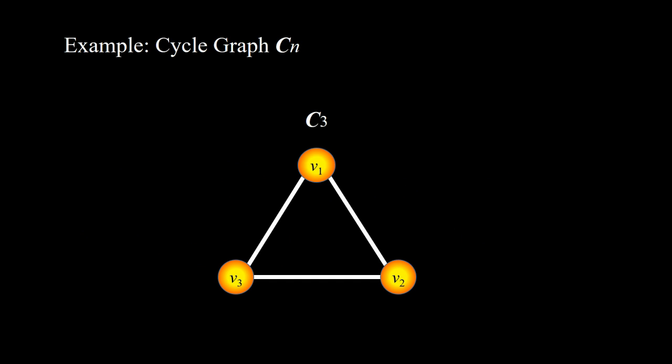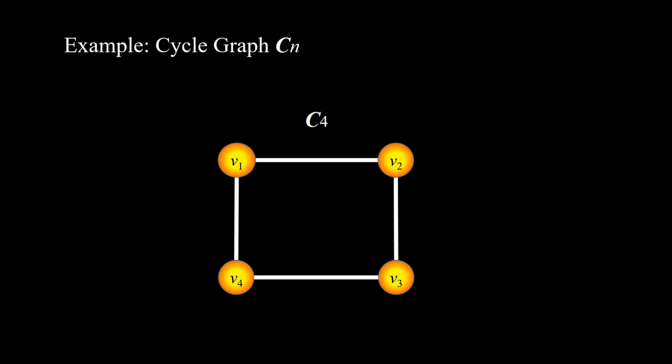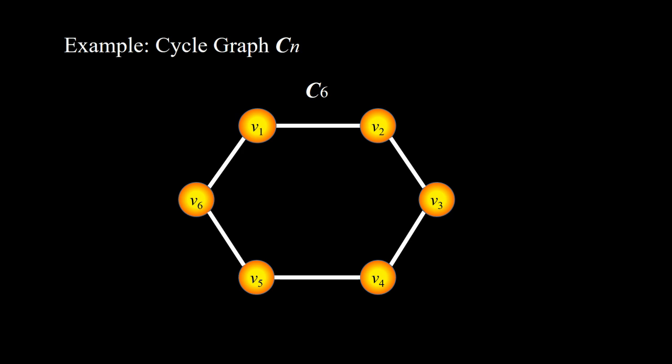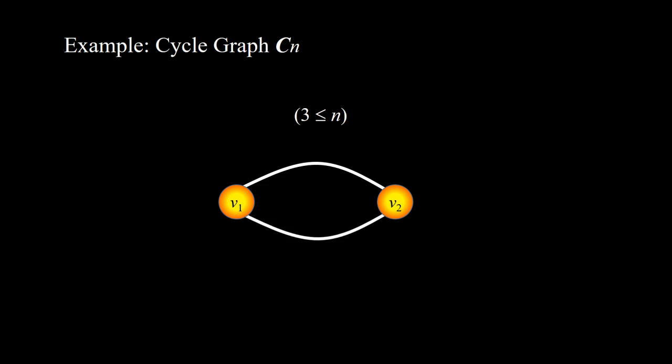C3 consists of 3 vertices and is a cycle; C4 is a cycle of 4 vertices; C5 is a cycle of 5 vertices. Note that n starts from 3 because for n equals 2 we would get a graph with parallel edges, which is therefore not a simple graph.